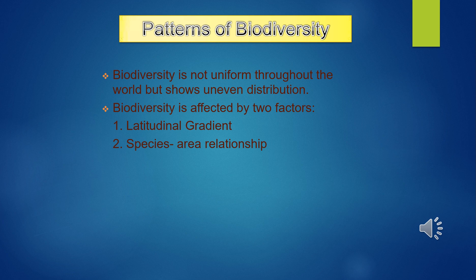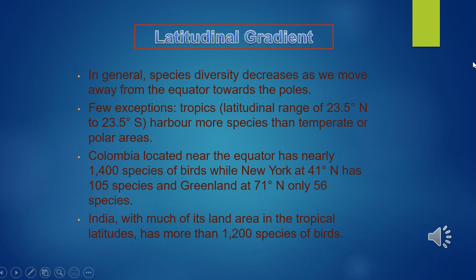In general, species diversity decreases as we move away from the equator towards the poles. The tropics, spanning latitudes 23.5 degrees north to 23.5 degrees south, harbour more species than temperate or polar areas. For example, Colombia near the equator has nearly 1400 species of birds, New York at 41 degrees north has 105 species, and Greenland at 71 degrees north has only 56 species. India, with much of its land in tropical latitudes, has more than 1200 species of birds. The second pattern is the species-area relationship, where a tropical forest can have up to 10 times as many vascular plant species as a temperate forest of equal area.